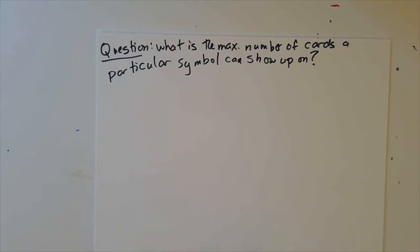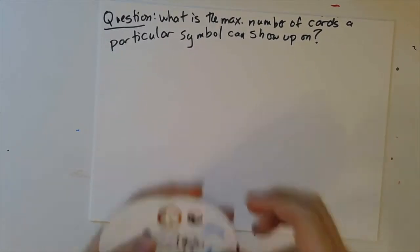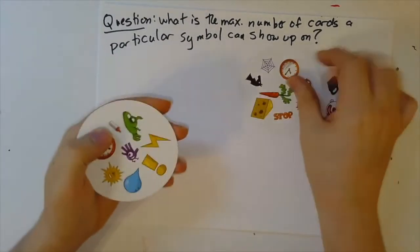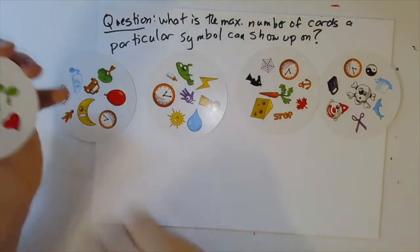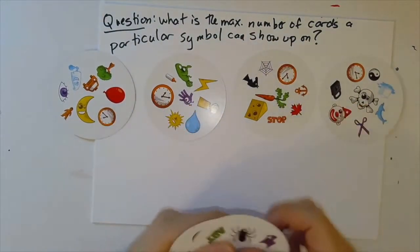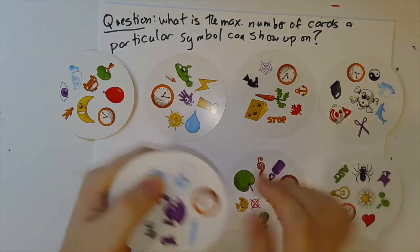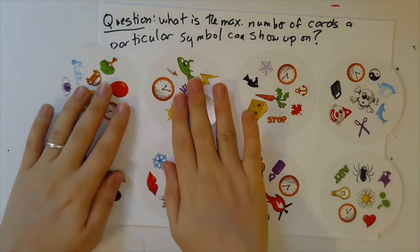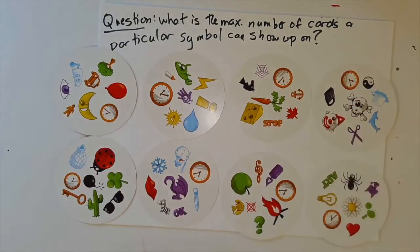So, just as an example, I chose here all of the cards from the deck that have the symbol, and hopefully by now you have noticed, the clock. These are all the cards that have the clock on them.